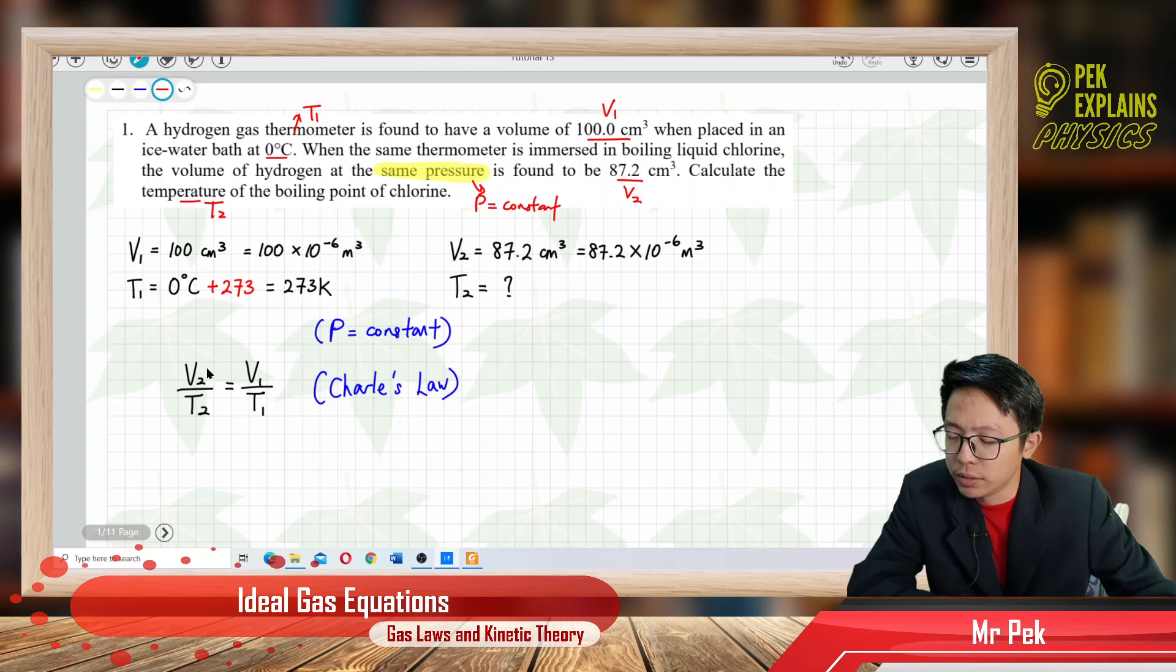V₂/T₂ equals V₁/T₁, so we just substitute all the information. All the information is already in SI unit. Remember, before you substitute into the equation, all the quantities must change to SI unit first, especially the temperature must change to Kelvin first.